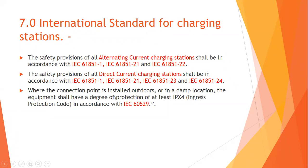Where the connection point is installed outdoors, in a damp location, or near a damp location, the equipment shall have a degree of protection of at least IPX4, in accordance with IEC 60529. These are the latest guidelines of CEA covering all seven rules of Chapter 11 on safety provisions for electric vehicle charging stations.